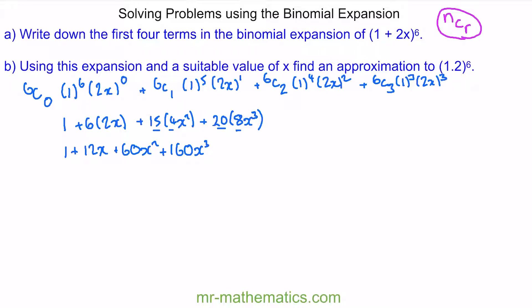So here we have the first four terms of this expansion: 1 + 12x + 60x² + 160x³. Now for part b, we've been asked to use this expansion to find a suitable value of x and an approximation to 1.2 to the power of 6. Comparing 1 plus 2x all to the 6 with 1.2 to the 6, we can write the equation 1 plus 2x equals 1.2.